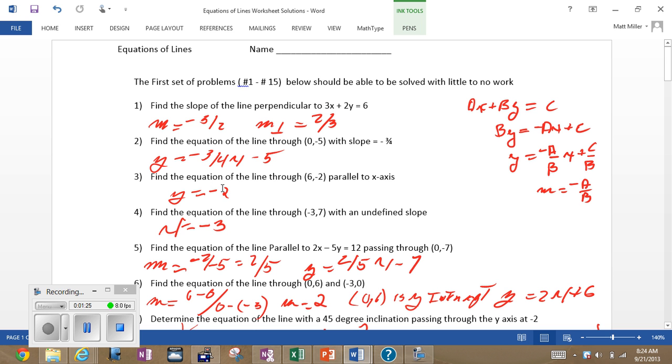Find the equation in number three, parallel to the X-axis. Parallel to the X-axis will always be Y is equal to something. In this case, Y is equal to negative two. And the undefined slope is a vertical slope.